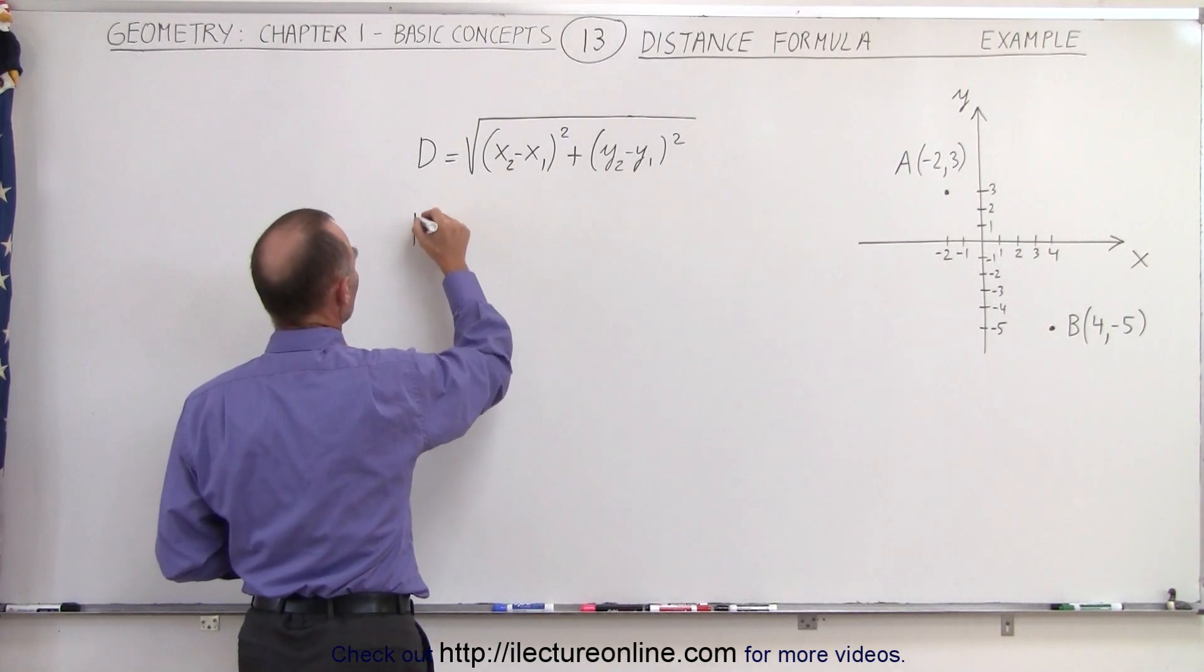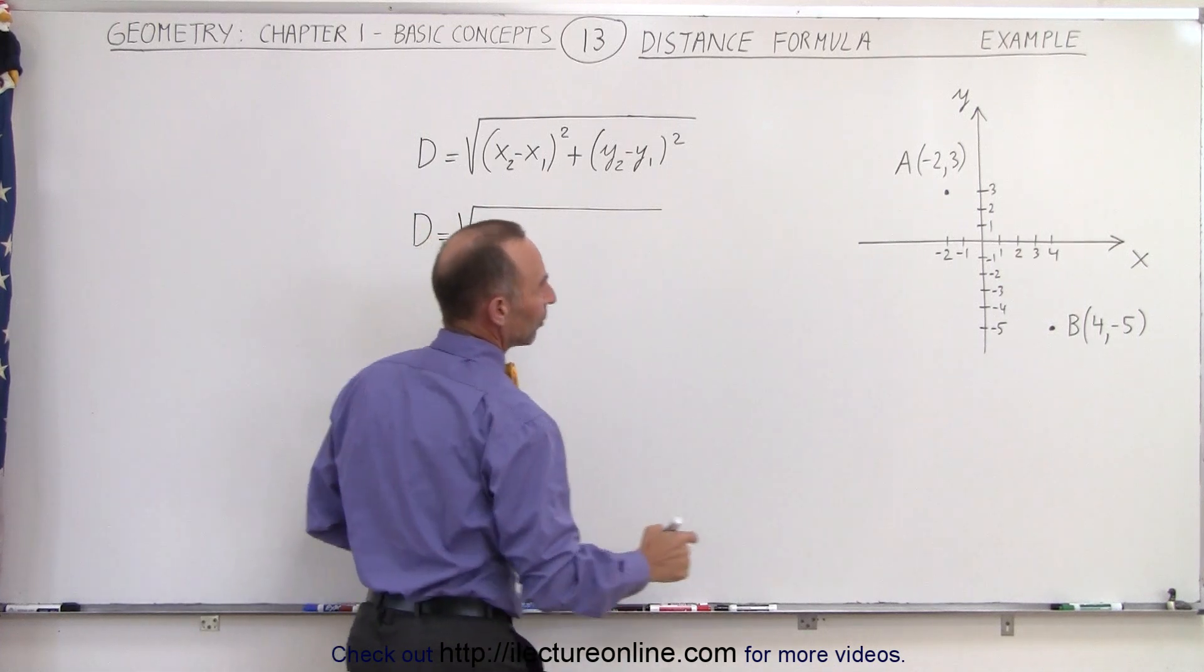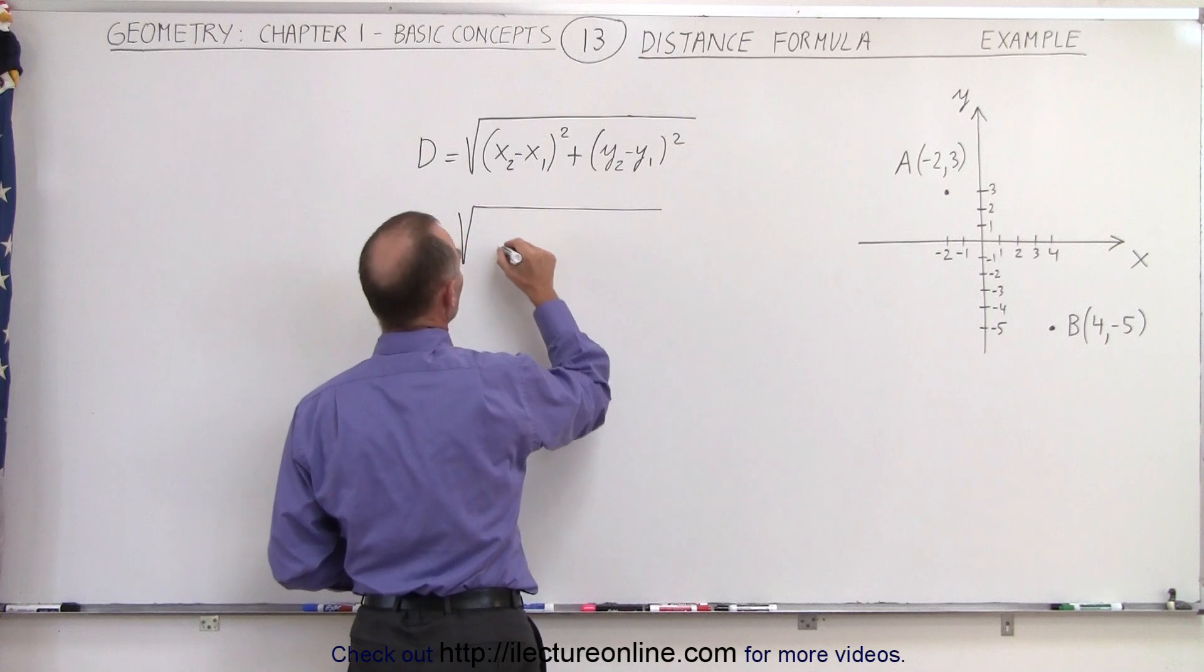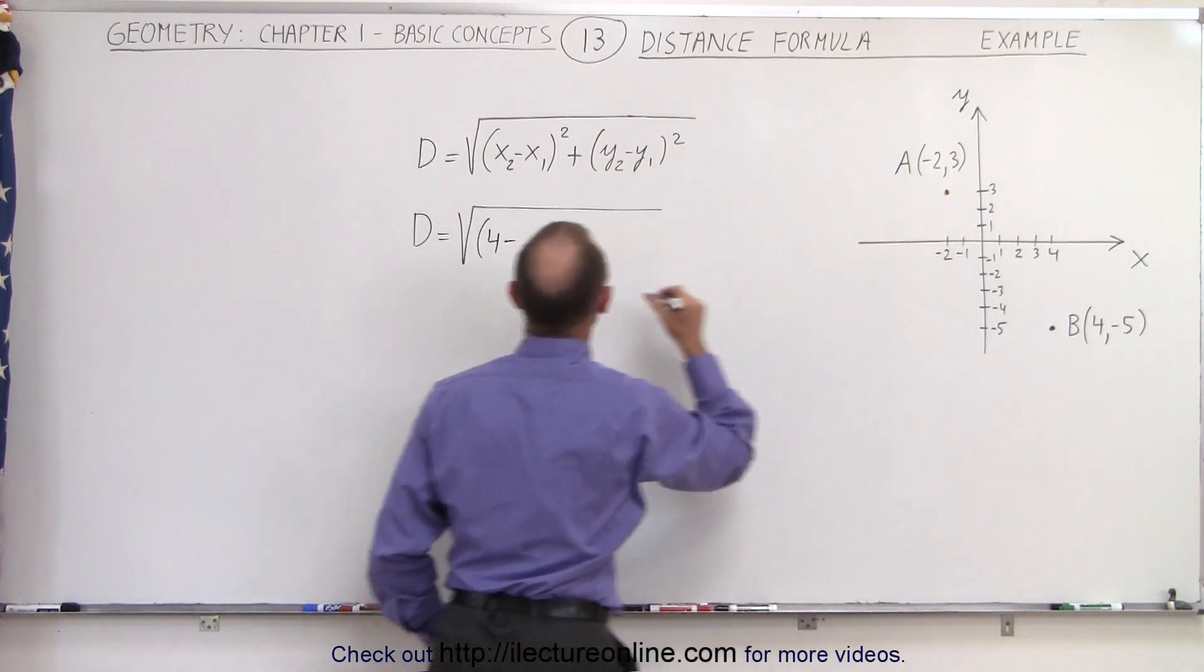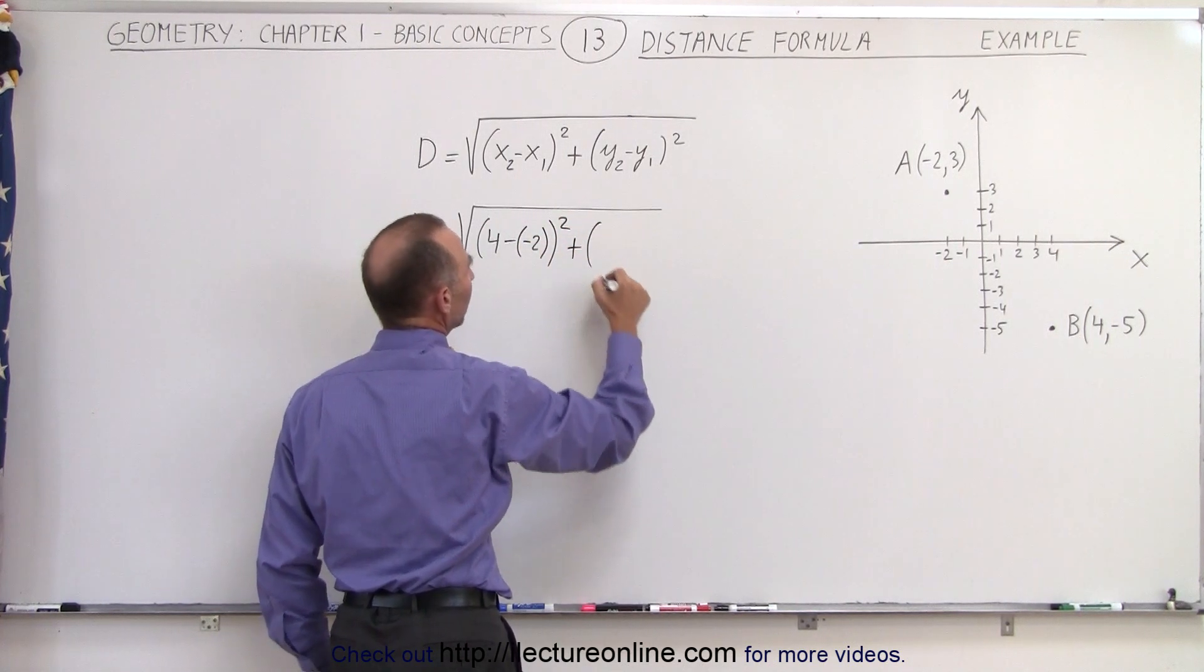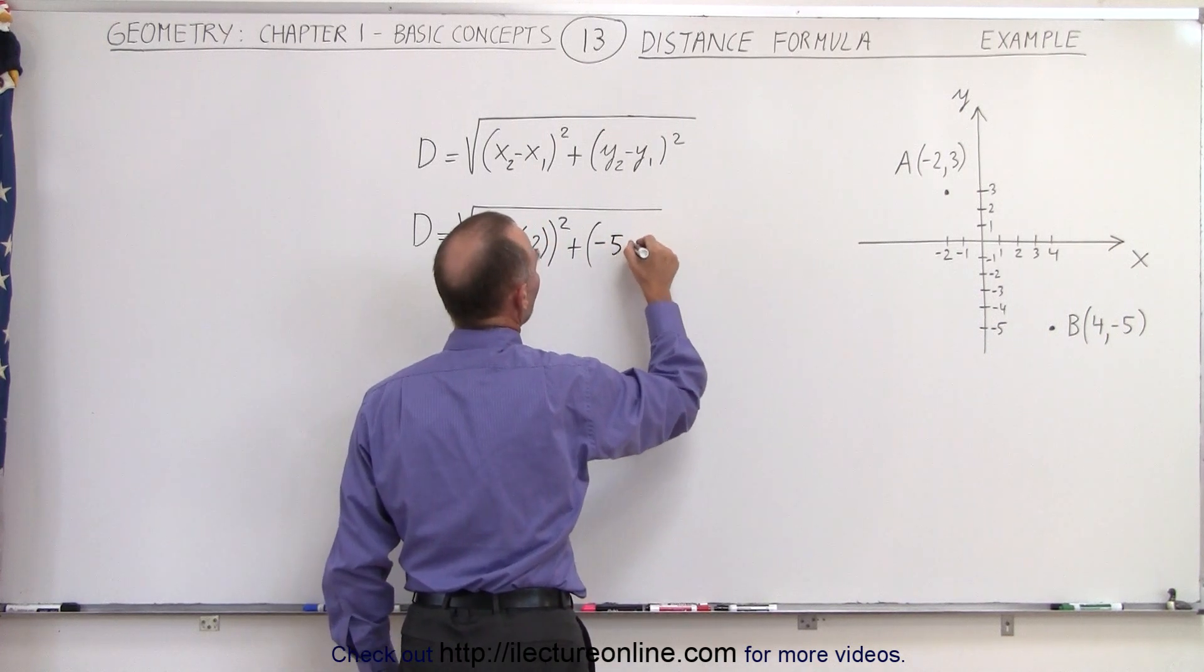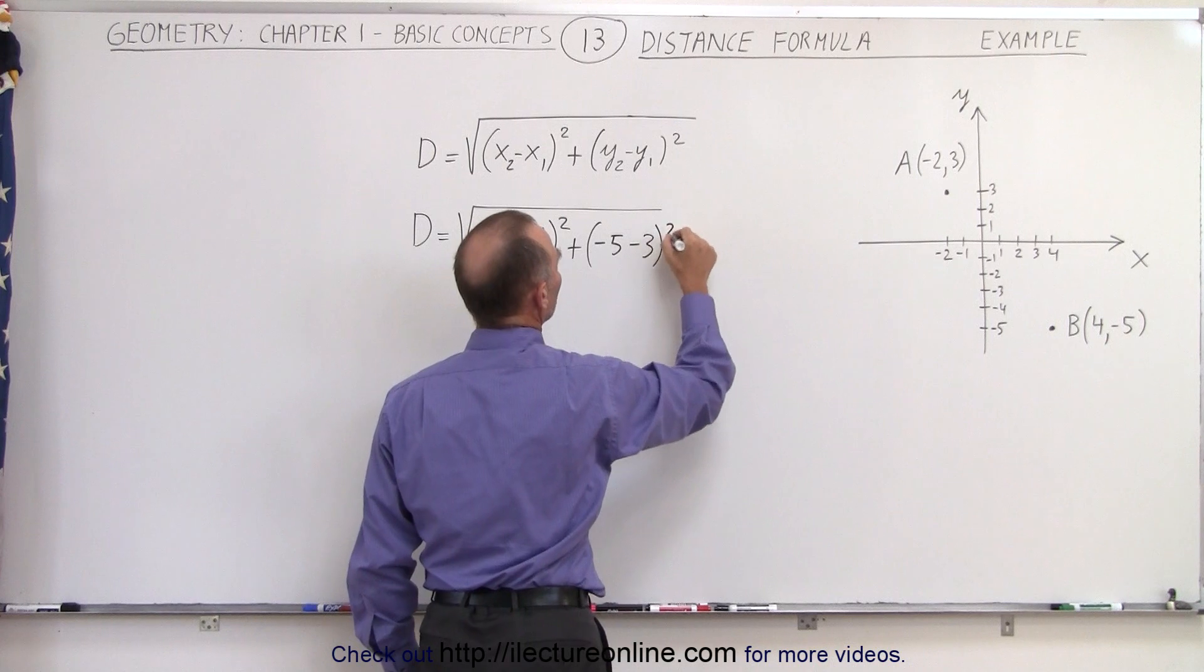So now when we plug in the values, d is equal to the square root of, so let's take the point B, the x right there, let's call it x2, so it would be 4 minus a minus 2 and we're going to square that plus, let's take y2 which is a minus 5 and subtract from that a positive 3 and we square that.